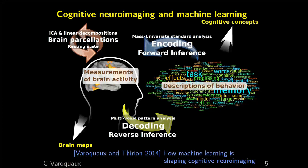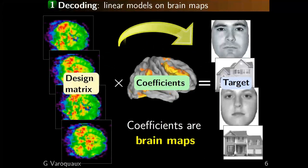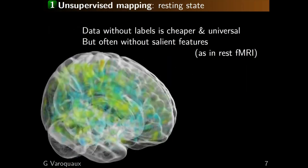Nilearn sits in all those different use cases and tries to make them easier. The most common problem people want to work on is decoding — predicting from brain data some stimuli or some pathology. The nice thing is that if you use a linear model, the coefficients are brain maps, so they're highly interpretable. Another setting in unsupervised learning is resting-state fMRI, and the core intuition of why this is important is simply that data without labels is cheaper and universal — you can accumulate it. The problem is it often comes without salient features.